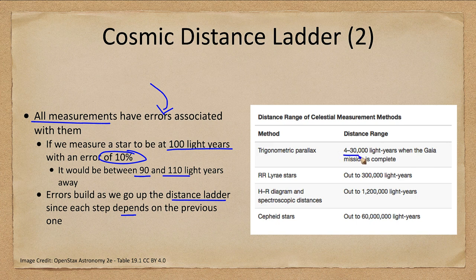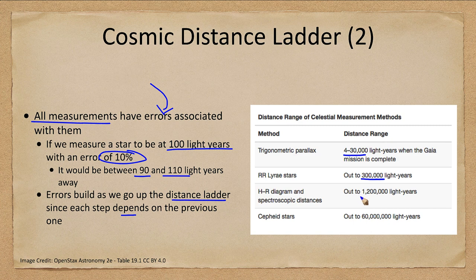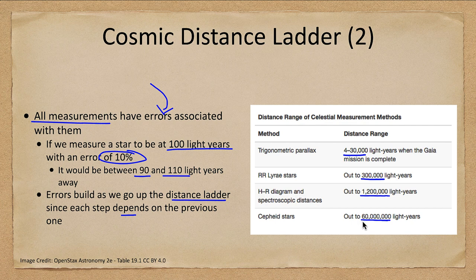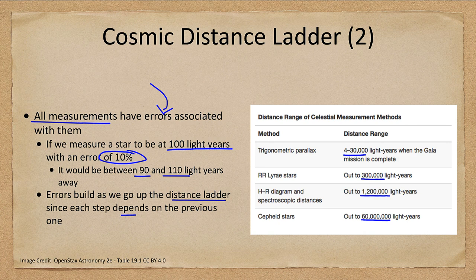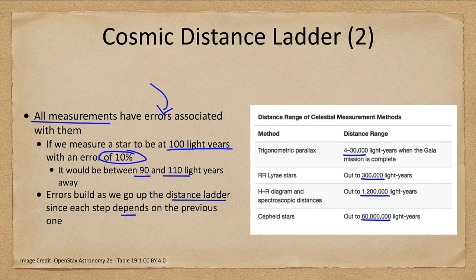Parallax works out to about 30,000 light years once the Gaia mission is complete. RR Lyrae stars are visible out to 300,000 light years, spectroscopic parallax to a little over a million light years, and Cepheids out to about 60 million light years. However, we're going to be talking about billions of light years. We're not even getting close to 1 billion light years, which is more than 10 times the distance that a Cepheid can be used to measure. We're going to need many other methods to measure distances to the galaxies.